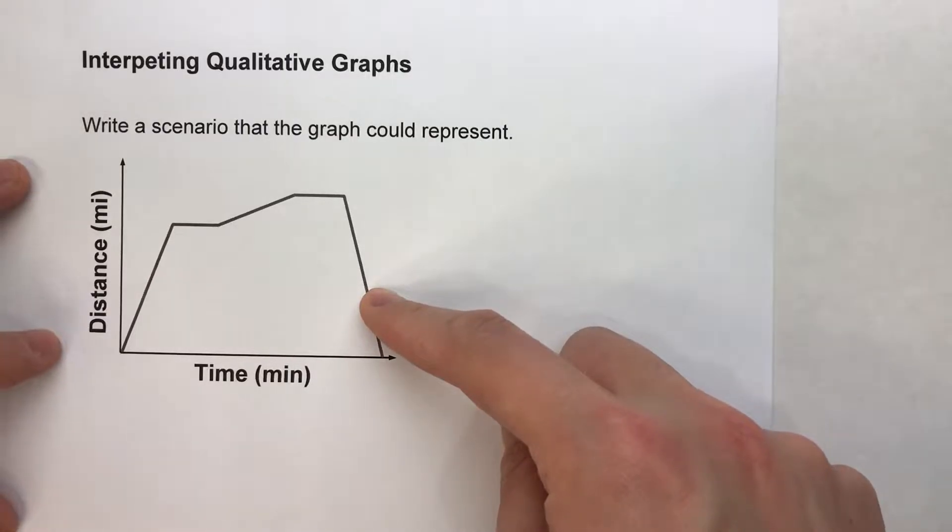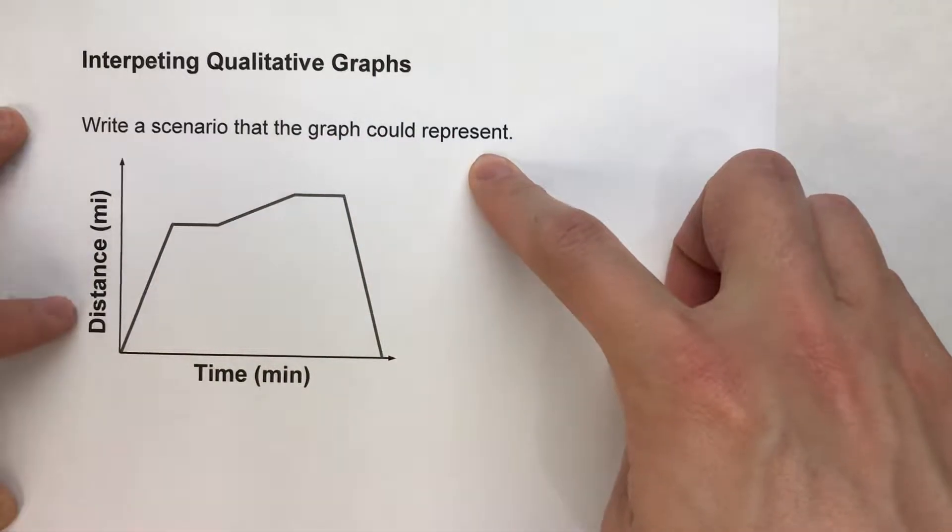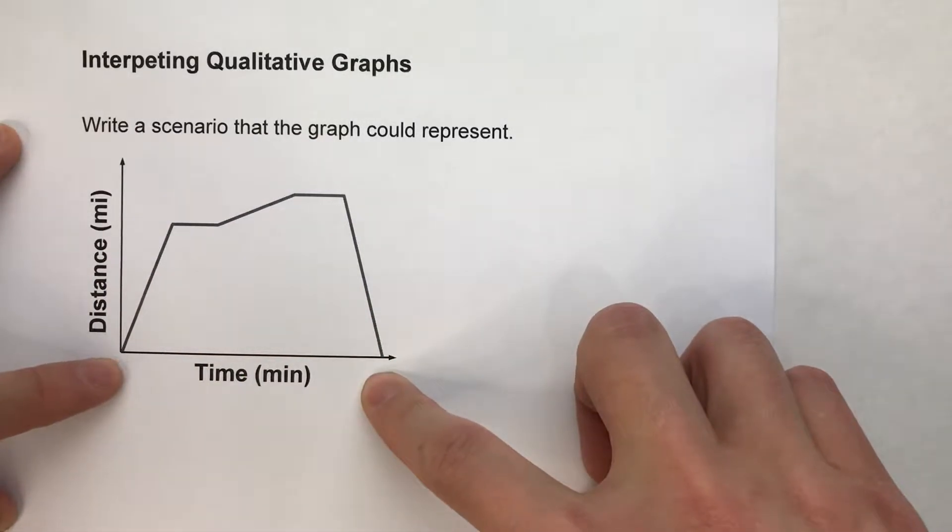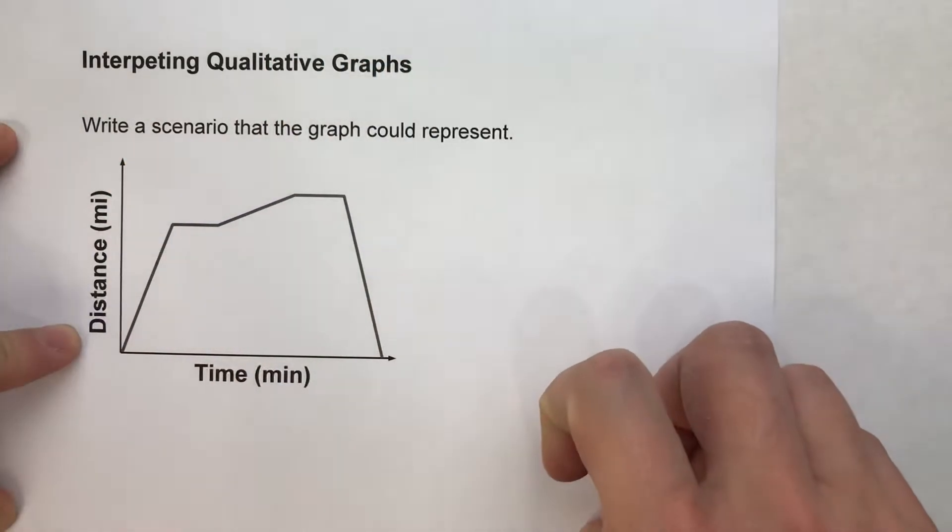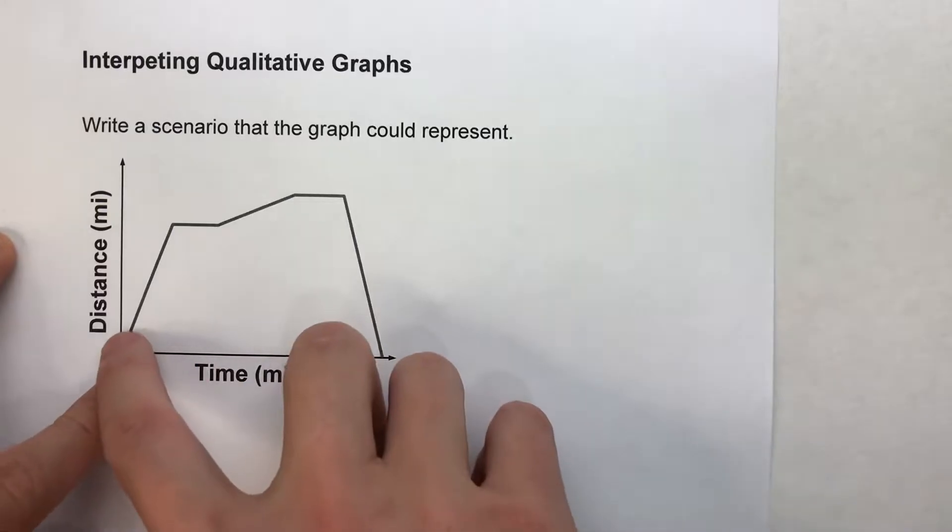So we rely on the shape of the graph to figure out what's going on. For this example it says write a scenario that the graph could represent. Now our x-axis is time in minutes and our y-axis is the distance in miles. And notice there's five intervals in this graph.